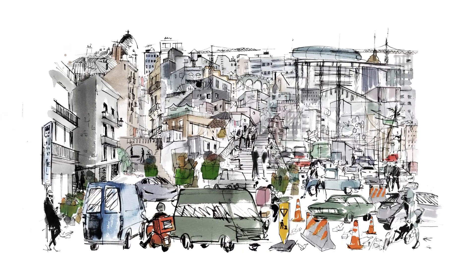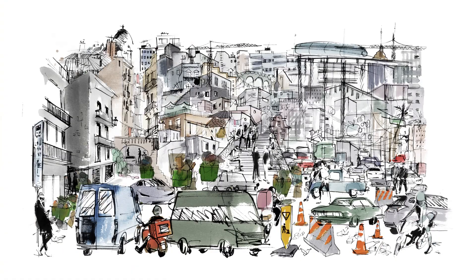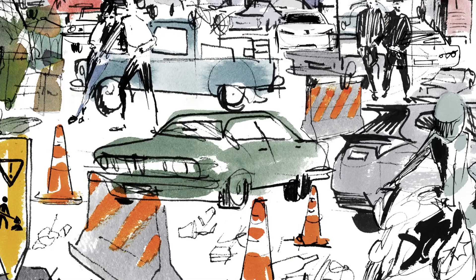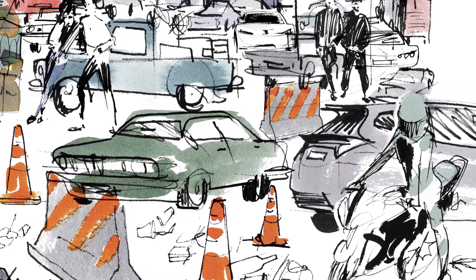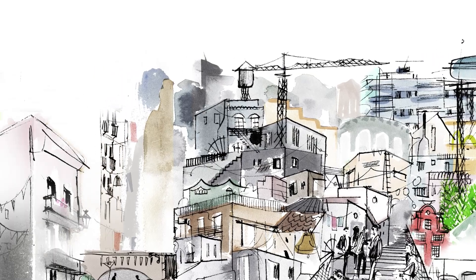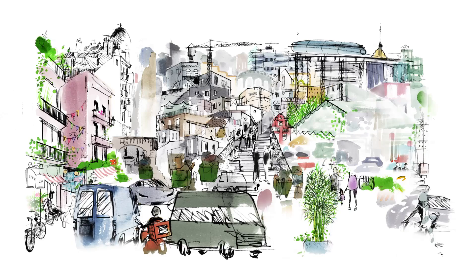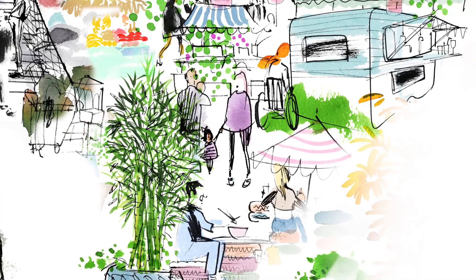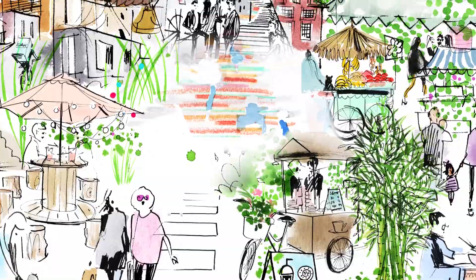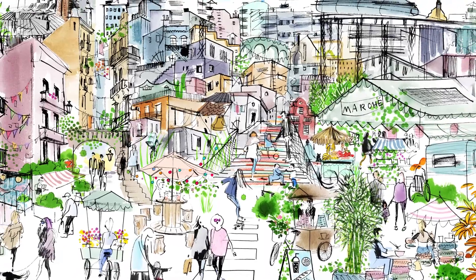Remember what the space looked like at the beginning? What is the likely result of the HerCity process? A place where everyone thrives, that is safe, has good livelihood opportunities, and is ecologically sustainable. That's what HerCity could look like.